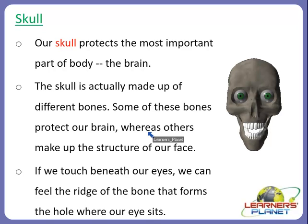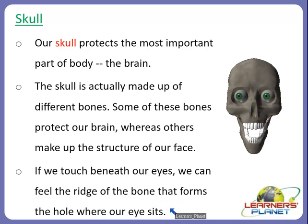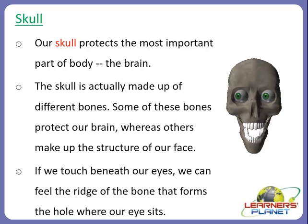If we touch beneath our eyes, we can feel the ridge of the bone that forms the hole where our eye sits. Although we cannot see it, we can feel this ridge of bone. There is also the smallest bone in our whole body, which is in our head, and another kind of bone present in the eardrum which measures about 0.13 inches.